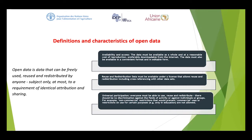The second characteristic is reuse and redistribution. Open data must be available under a license that allows reuse and redistribution, including cross-referencing with other datasets. This is very important because issues of copyright and plagiarism come into play. Finally, the last characteristic of open data is universal participation. Everyone must be able to use, reuse and redistribute. There should be no discrimination against fields of activity or against individuals or groups — for example, non-commercial restrictions that would prevent commercial use, or restrictions for only education, are not allowed.